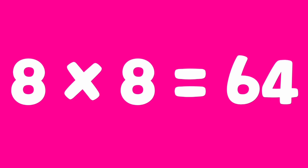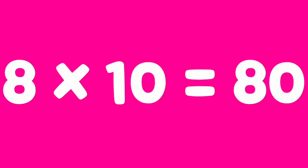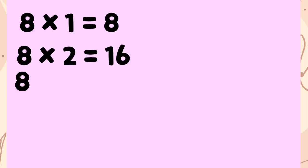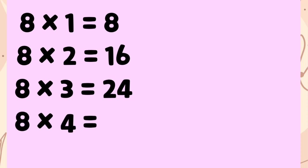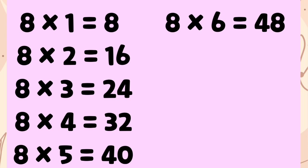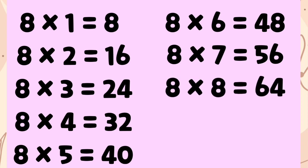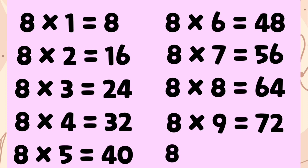8 9's are 72. 8 10's are 80. Repeat once again: 8 1's are 8. 8 2's are 16. 8 3's are 24. 8 4's are 32. 8 5's are 40. 8 6's are 48. 8 7's are 56. 8 8's are 64. 8 9's are 72. 8 10's are 80.